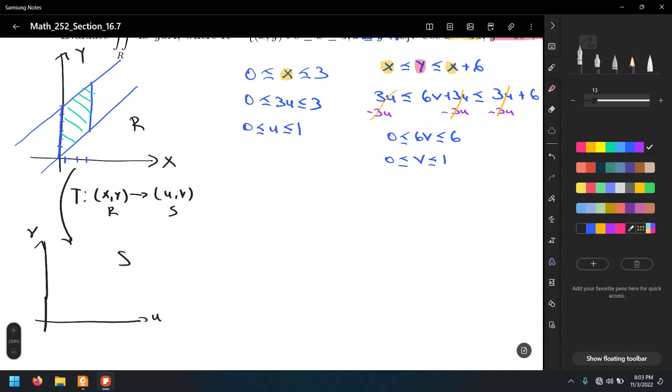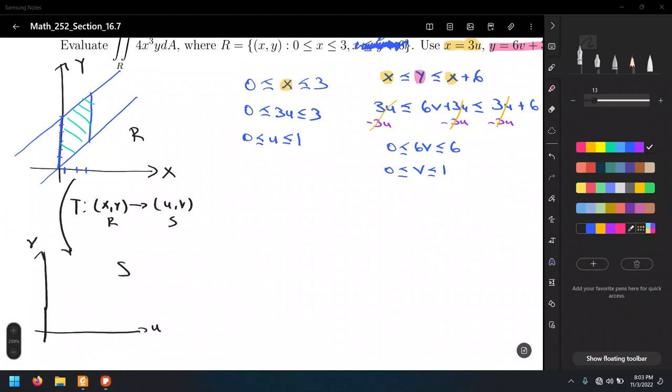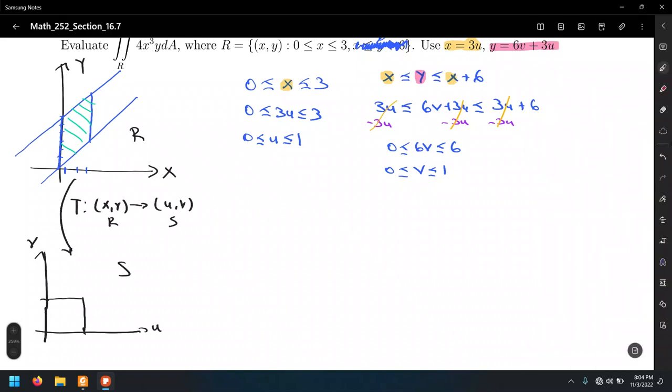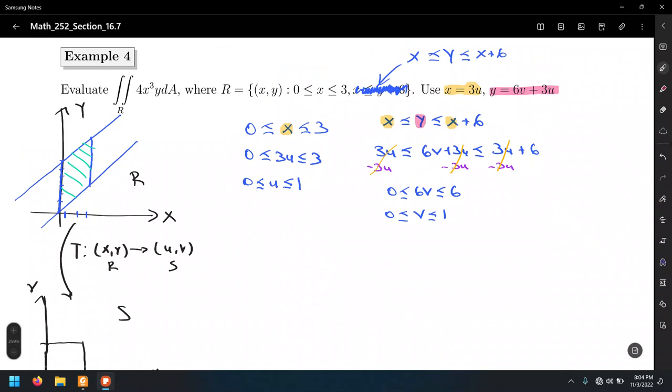That's going to be called S this time. That's R to S. That's u, that's v. And u varying between 0 and 1. We're going to have a unit square, which will be a lot simpler to integrate than this tilted plane.